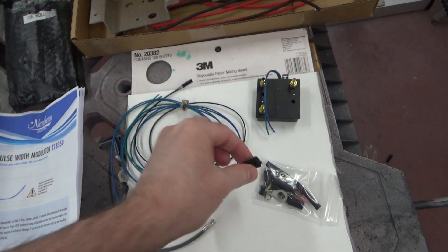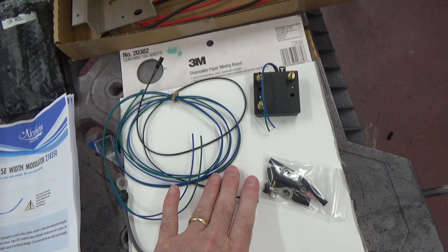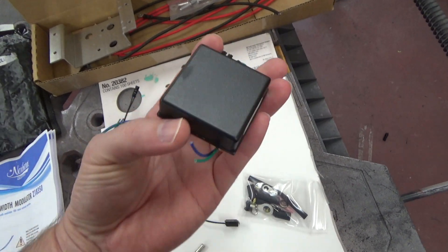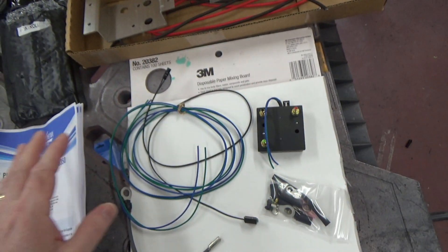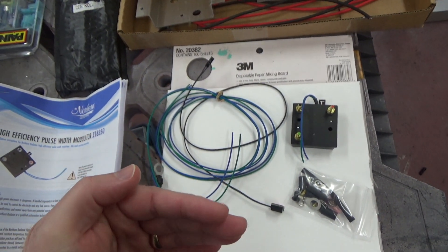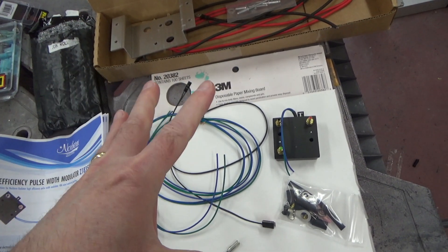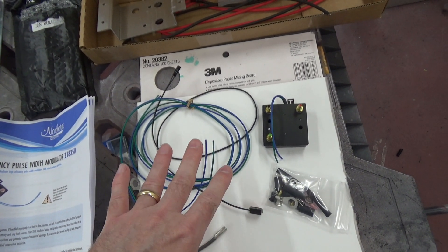The way this thing works is you have a temperature sensor that you put directly on your radiator and it measures the temperature of the coolant. This guy drives the fans using PWM, pulse width modulation, which allows you to have a nice slow start instead of just going bang and turning on.